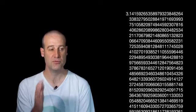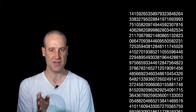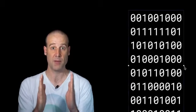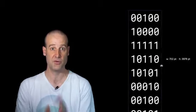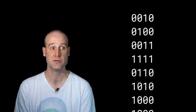So I took pi, removed the three-point, took all the digits after that, converted them into binary, and then reduced the width so they wrap every four digits. Color those in, so zeros are the background, ones are the foreground, start scrolling down.